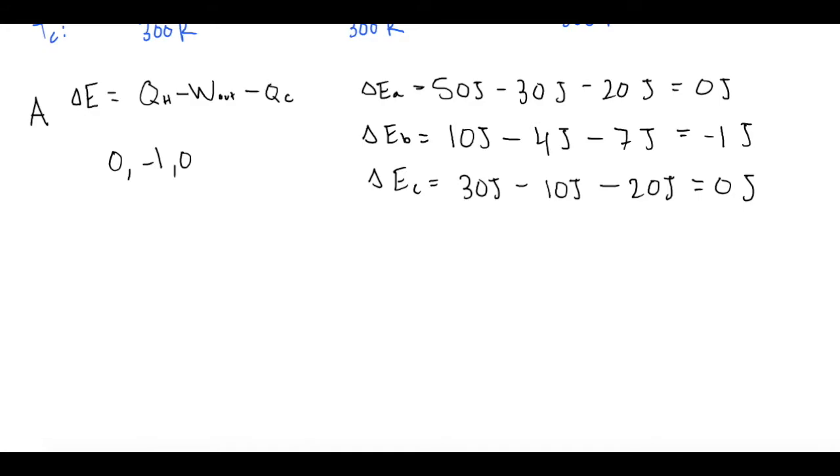So for part B, the one that violates that is engine B. The reason is we have 10 joules coming out of stuff that we're taking out of the engine, but they say that we're getting 4 that we're doing work and 7 going to the cold. So that's basically 11 joules. So they're saying we're using 10 joules to get out 11 joules, which makes no sense.